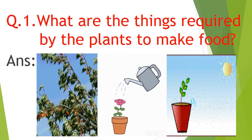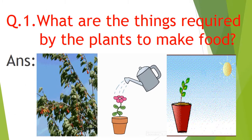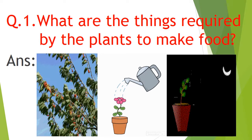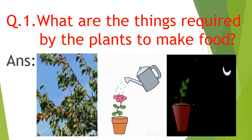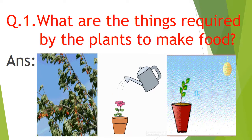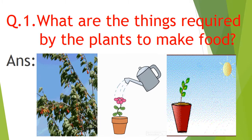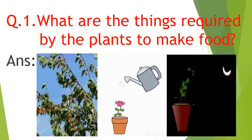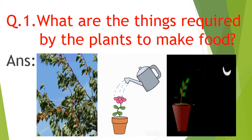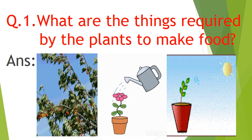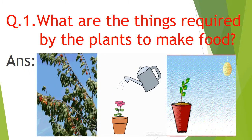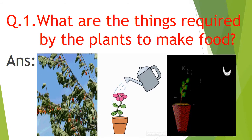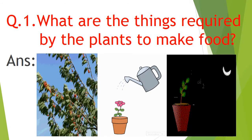Question number one: what are the things required by plants to make food? By seeing the picture, you have to say the answer. Plants need air, water, and sunlight to make food.